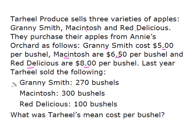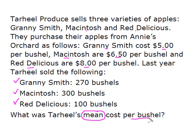So last year, Tar Heel bought from Annie's and sold 270 bushels of Granny Smith, 300 bushels of Macintosh, and 100 bushels of Red Delicious. What Tar Heel wants to know is: what was their average or mean cost per bushel? This is one of those instances where using a weighted average makes the most sense.